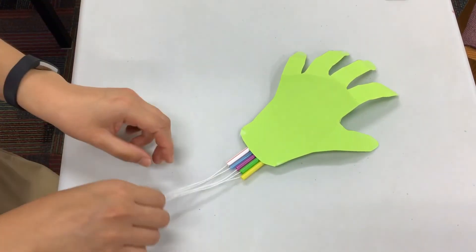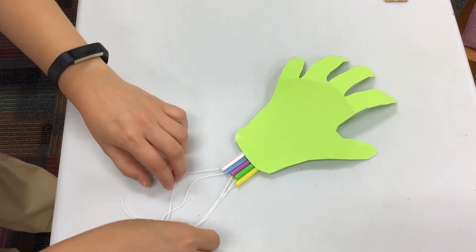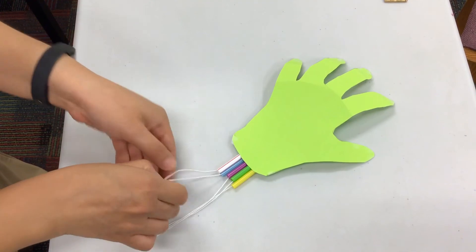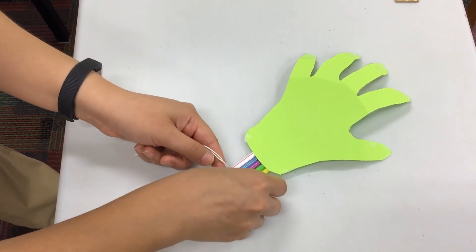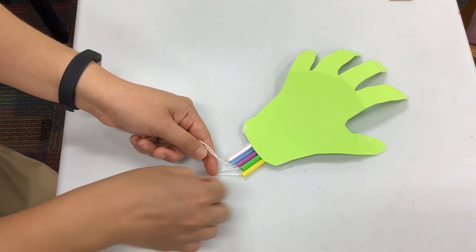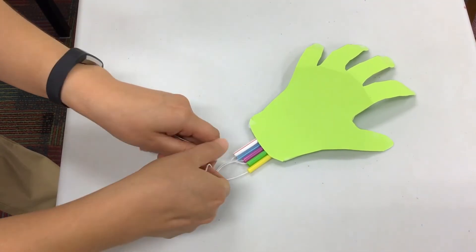If you decorated the other side of your hand, this side will look really cool. And now we're going to pull on different strings to move our robotic hand. We're going to try to make a peace sign with our robotic hand.